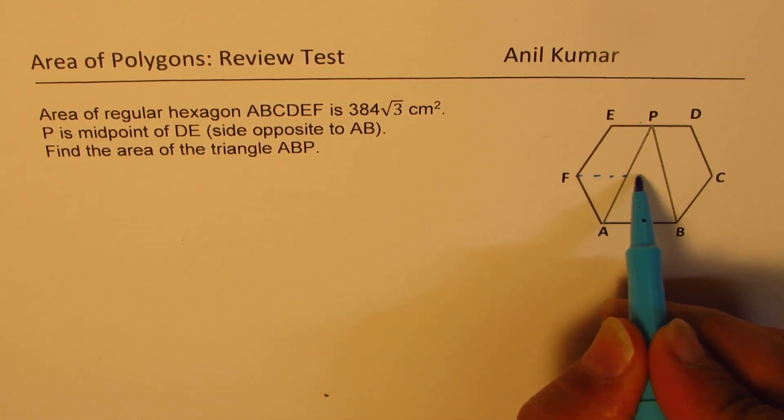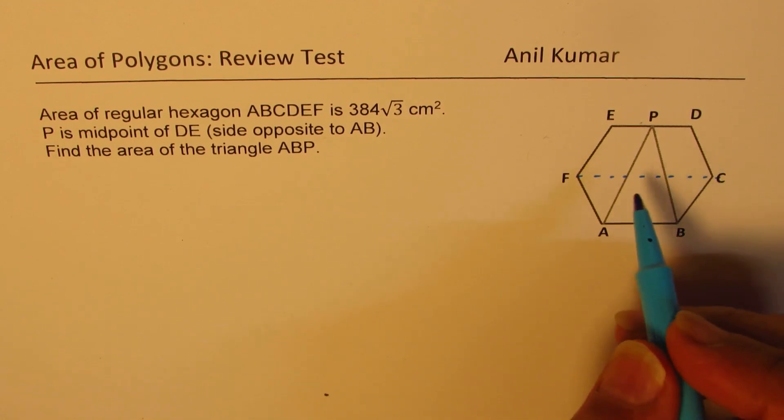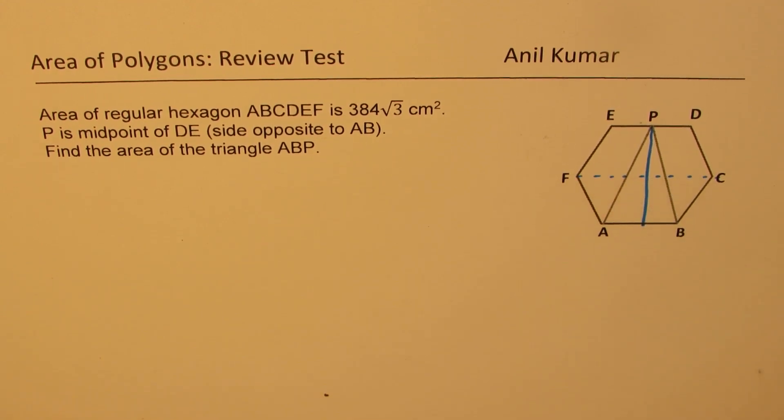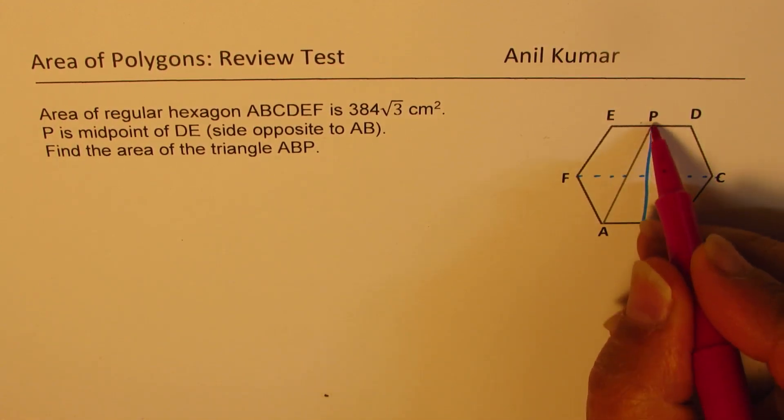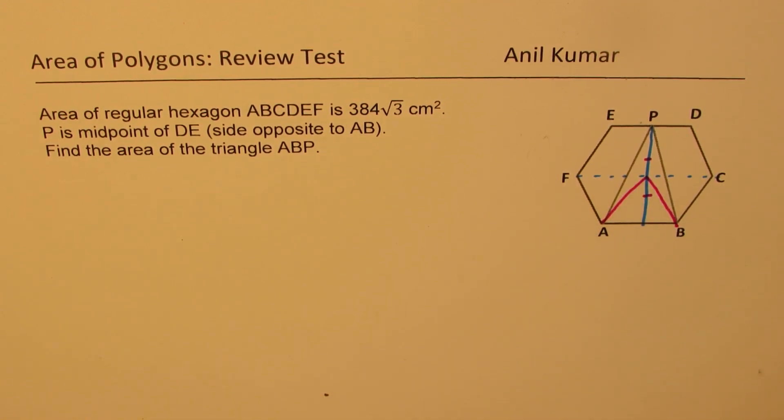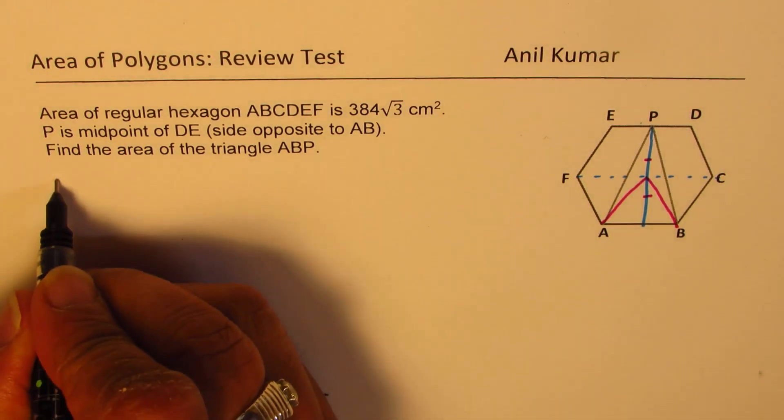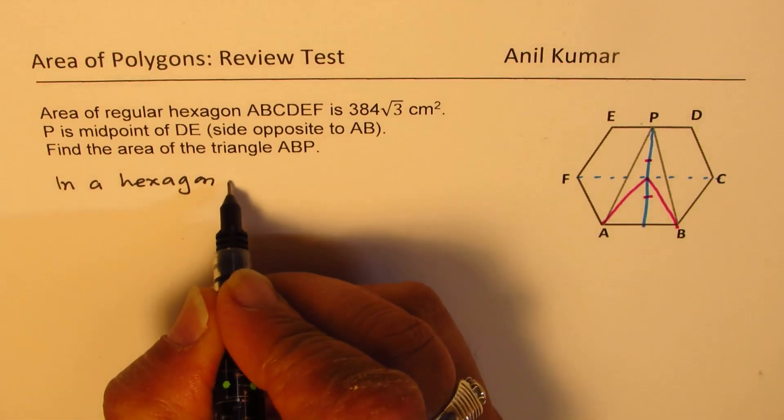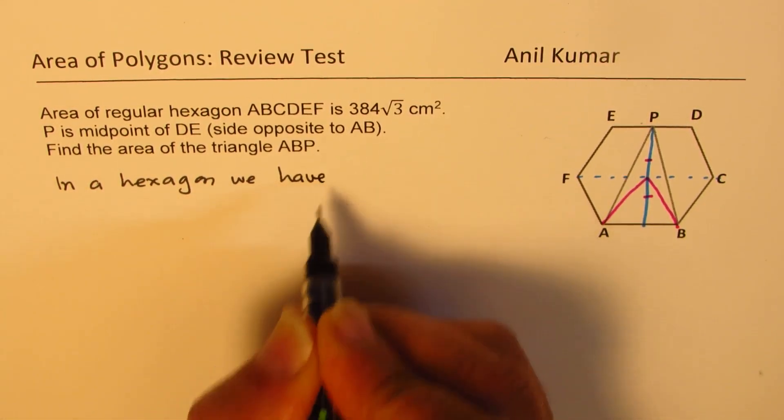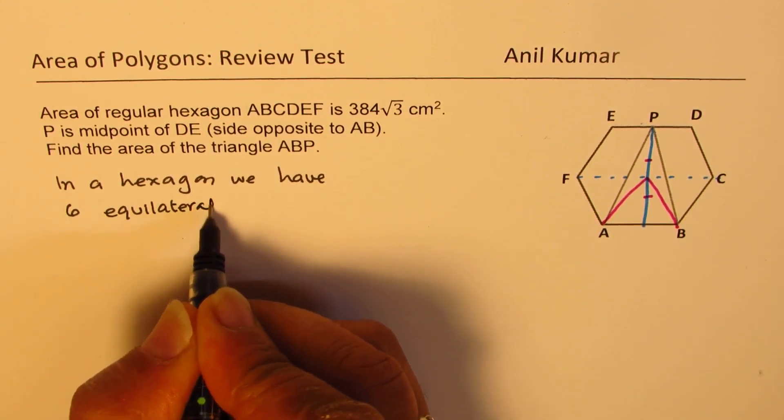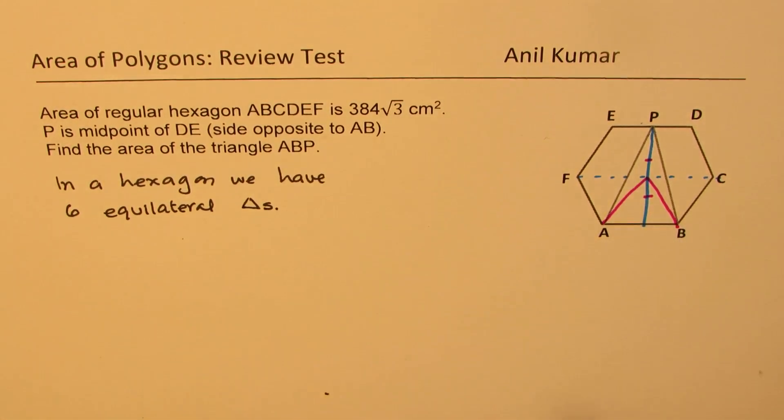Hexagon is sum of 6 triangles, so let's find area of each triangle. If I drop a perpendicular from here, we can see that this height is twice, from the symmetry, the height of each triangle which we can have in it. In a hexagon, we have 6 equilateral triangles, as shown. That is one of them.